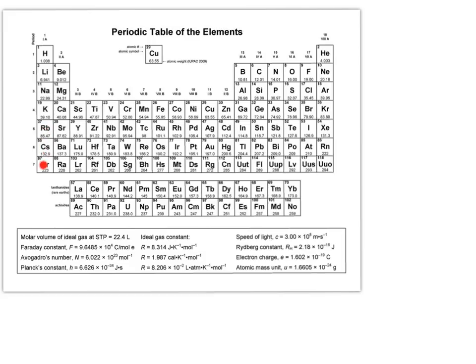you've got group 1A, the alkali metals, 2A, the alkali earth metals, and then these metals. Lithium, for example, is a metal, and metals form cations.